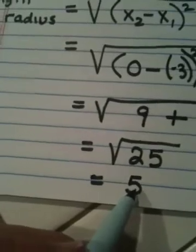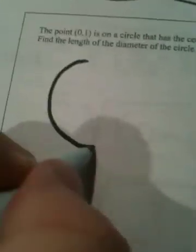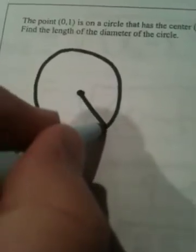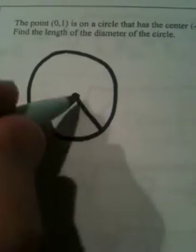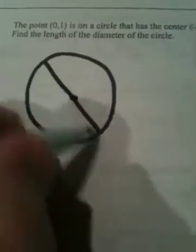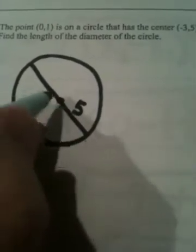Remember what we were asked for in this problem. It said, find the length of a diameter of a circle. Now, if you look at a circle in general, the radius goes from here to here. From the center to a boundary point. The diameter goes the entire way through the center. So if a radius is 5, the diameter would be twice that.